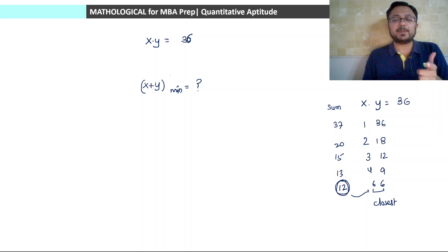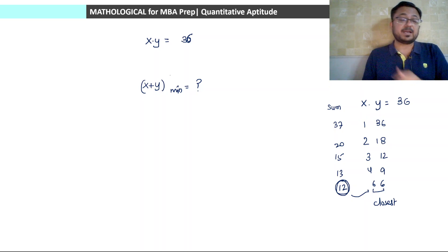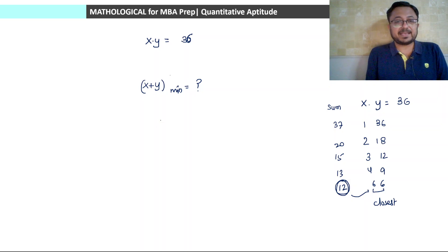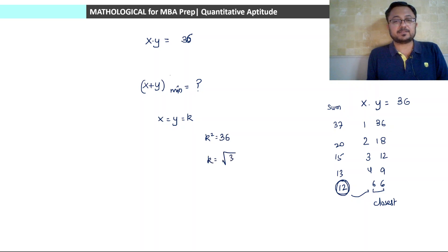When the product is given and we need to find the minimum sum, the sum is minimum when the numbers are equal. This implies x will be equal to y equal to k. Then x into y becomes k squared, so k squared is 36, which gives k equal to square root of 36, which is 6. So both x and y will be equal to 6.